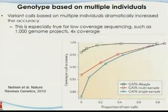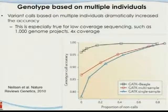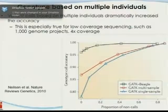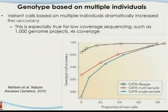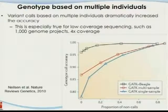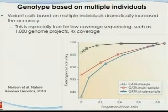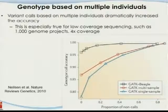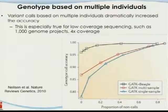Everything discussed — realignment, quality recalibration, variant identification — the goal is to appreciate the assumptions being used, not necessarily derive the equations yourself. In practice, there are well-packaged software tools: type a few Linux commands, wait a few days, and most of this analysis is done. The principles take time to understand, but the implementation is not that hard.